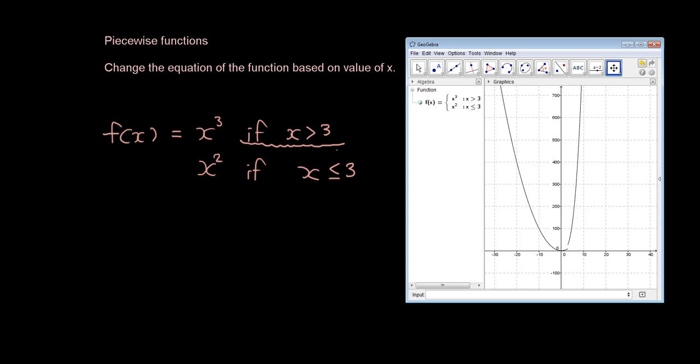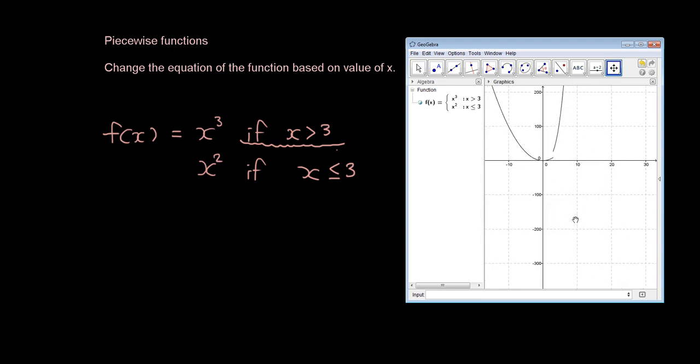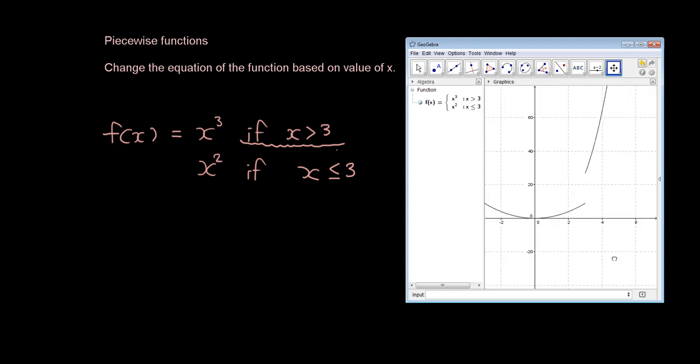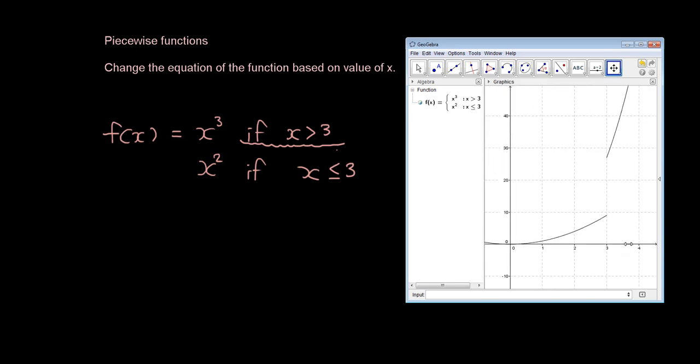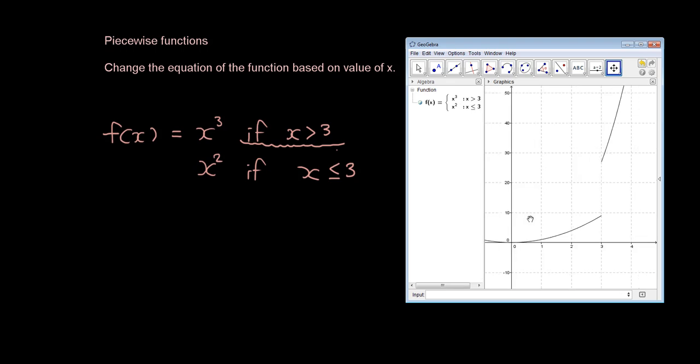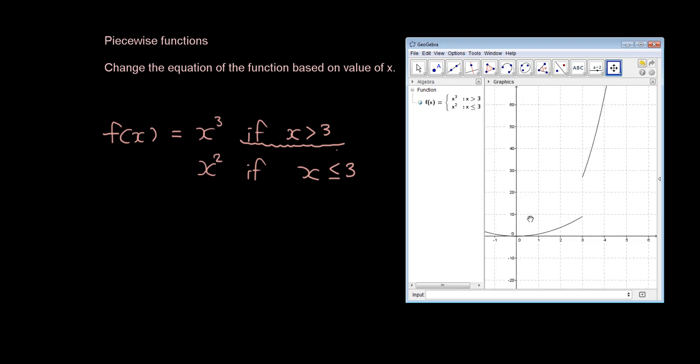When x is equal to 3, 3 squared is 9, whereas when x is bigger than 3, 3 cubed is 27. So here, essentially between 9 and 27, there's a big break when x equals 3. And that will usually happen with piecewise functions, because we're using different equations for different domains.